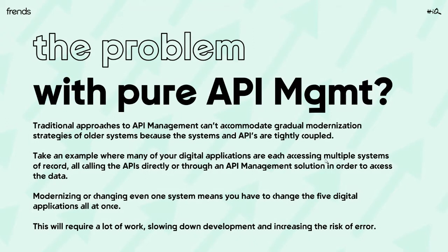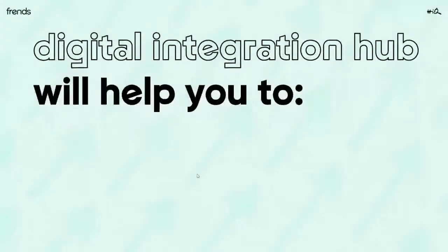You need to transform the back-end systems' existing integration and API capability to match the new system — or vice versa. If you don't, you'll have to apply a lot of work changing the digital applications, mobile apps, and web shops that rely on those APIs. This of course slows down development, increases the risk of error, and is cumbersome in many different ways.